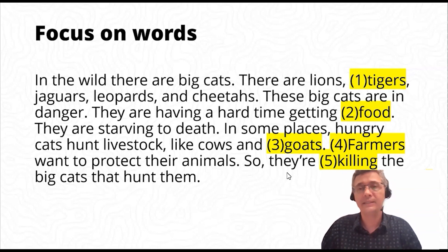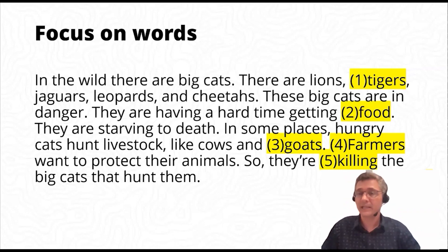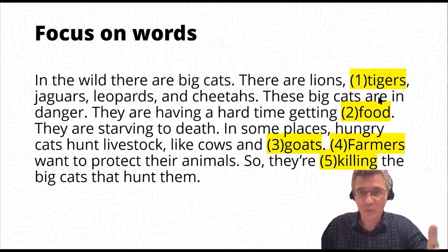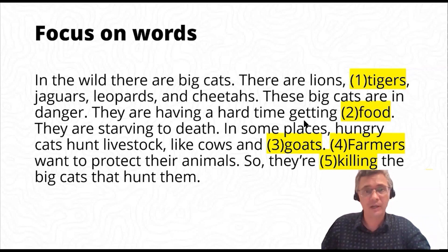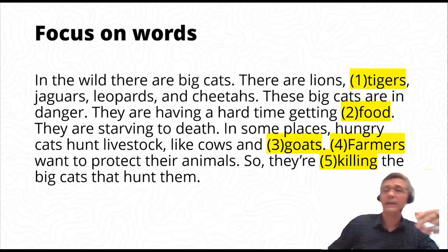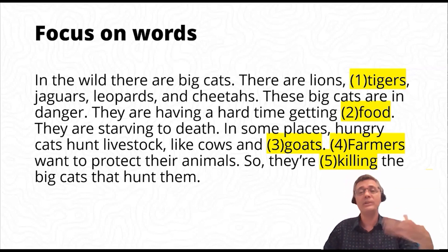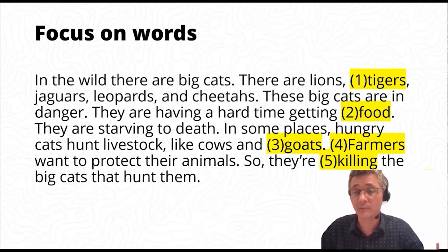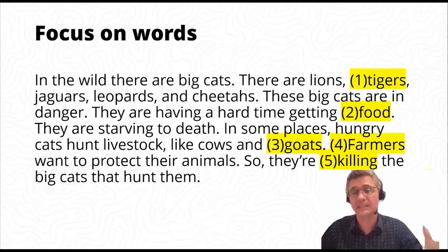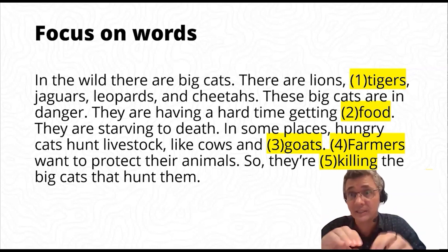Looking at the words around number five: 'they are [something]ing.' This is a process happening all the time — so it should be present continuous with -ing. We can explain this to our students. If a student wrote 'prey' for number two — 'hard time getting prey' — I would be very happy. Even if they translated from their mother tongue, it shows initiative and understanding of the text. We might say: great word, but we don't usually say 'get prey.' A better collocation is 'catch prey' or 'finding prey.' This activity is about vocabulary, using context clues and grammar to predict individual words.